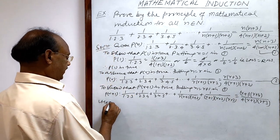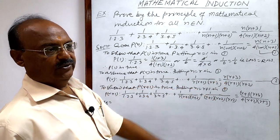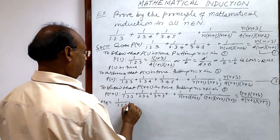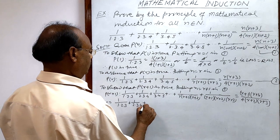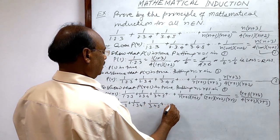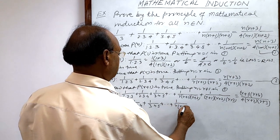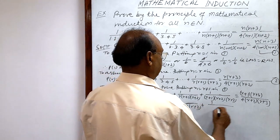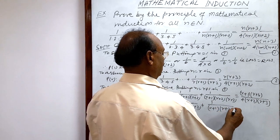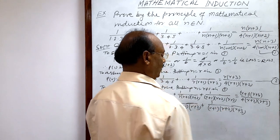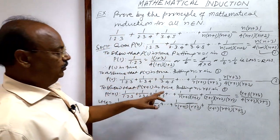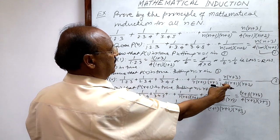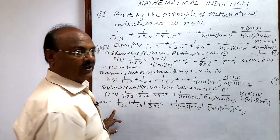We start with the left-hand side and aim to reach the right-hand side. The LHS is 1/(1·2·3) + 1/(2·3·4) + 1/(3·4·5) + ... + 1/(r·(r+1)·(r+2)) + 1/((r+1)·(r+2)·(r+3)). By relation number 2, the sum up to the r-th term equals r(r+3) / [4·(r+1)·(r+2)].